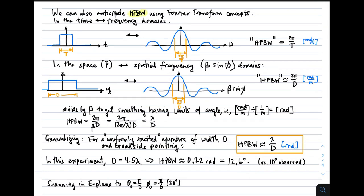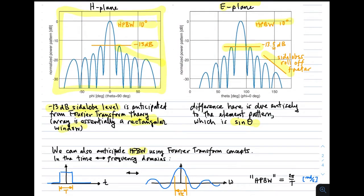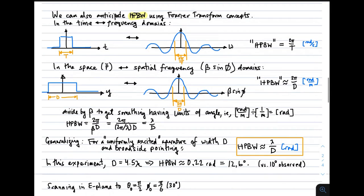We could also anticipate the half-power beam width using Fourier transform concepts. In other words, we don't have to necessarily go through the work here of plotting the pattern to anticipate what the half-power beam width is going to be. There are, in fact, some very good approximate methods for doing this. And to see this, we'll use the Fourier transform. So just recall, in the time and frequency domains, the way this works is that if you have a pulse in the time domain, and the width of the pulse is t, then what you see in the frequency domain is a sinc function. And the width of that sinc function, the half-power width of that sinc function, is 2 pi over t. That's something in radians per second.